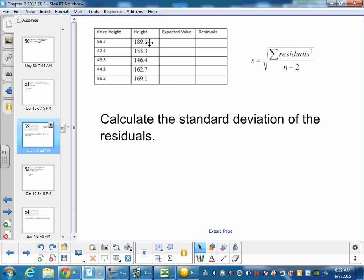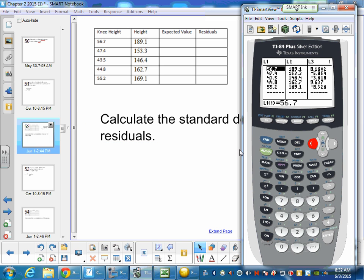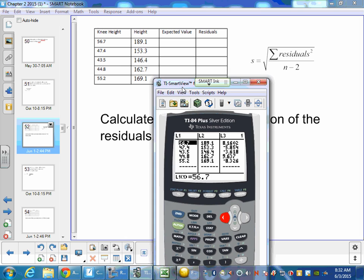So if we take our data set, the formula is the sum of all the residuals squared over n minus 2, and then we square root it. So there's no quick, easy button on our calculator to do this. I wish there was, but not yet.